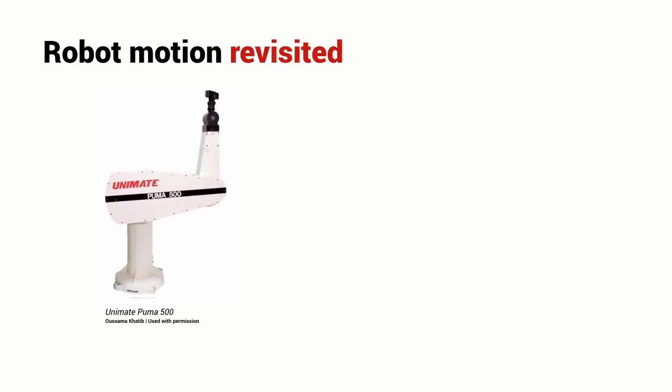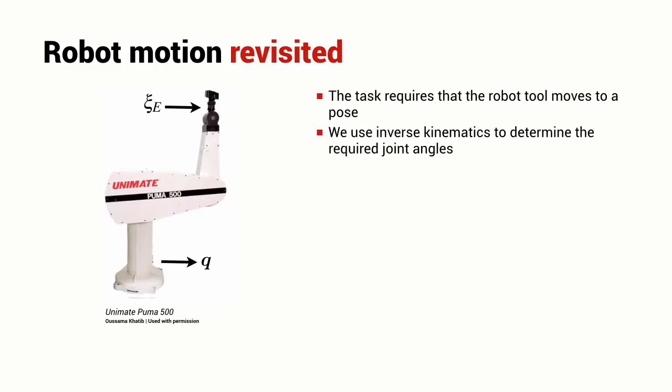Here's an image we've seen many times before. We want this robot to do something useful, so we're interested in where the end effector is positioned in three-dimensional space. We require the robot to move to a particular pose. We've talked about how we can use inverse kinematics to work out what joint angles are required for the robot's end effector to be at the pose we require to do the useful task.